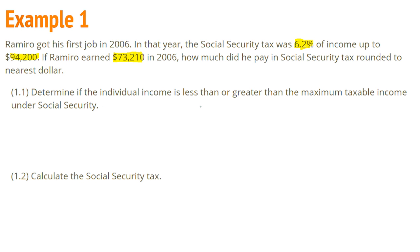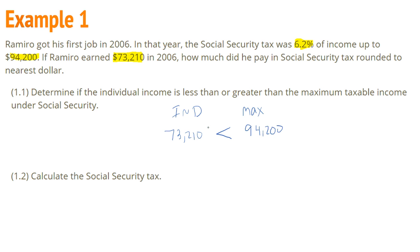We are going to compare our individual income to the maximum for social security. The individual income is $73,210 and the maximum is $94,200. Since $73,210 is less than $94,200, we use $73,210. If it wasn't, we would have to use $94,200.